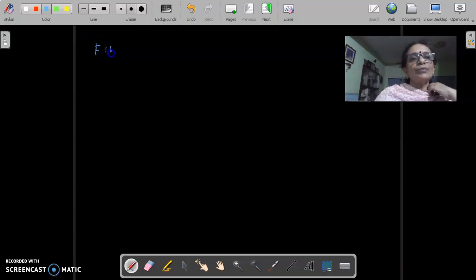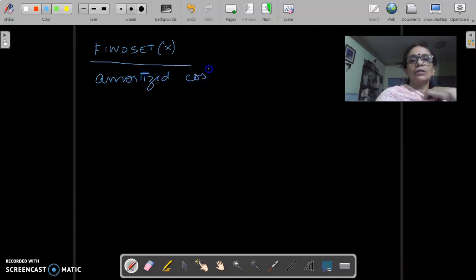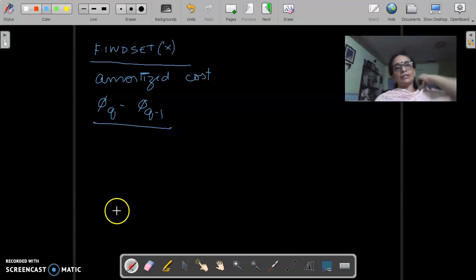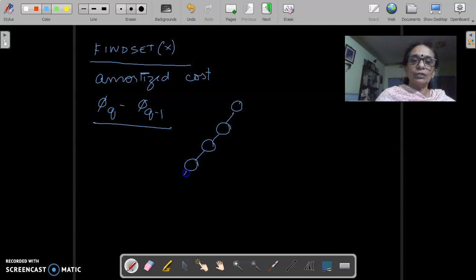So, let us analyze our find set operations as well. We will have a look at find set of x and see what is its amortized cost. As we said before, we will be making use of the potential method. We will be looking at phi_q minus phi_q minus 1 and so on in order to find it. Just before we do that, let us look at what are the nodes that are affected on a find set x and then we will be in a position to understand what follows.